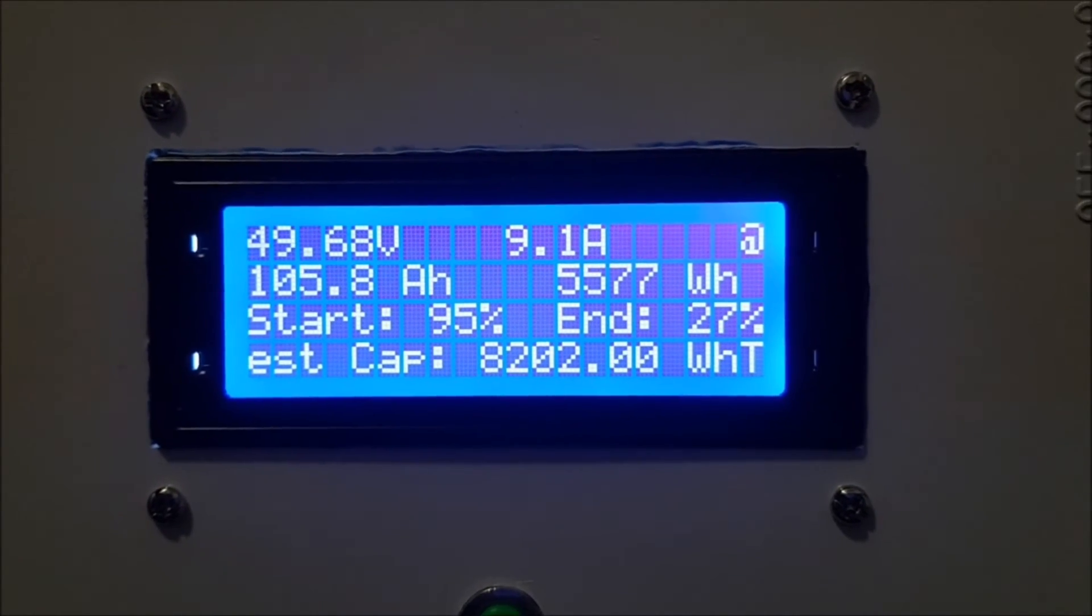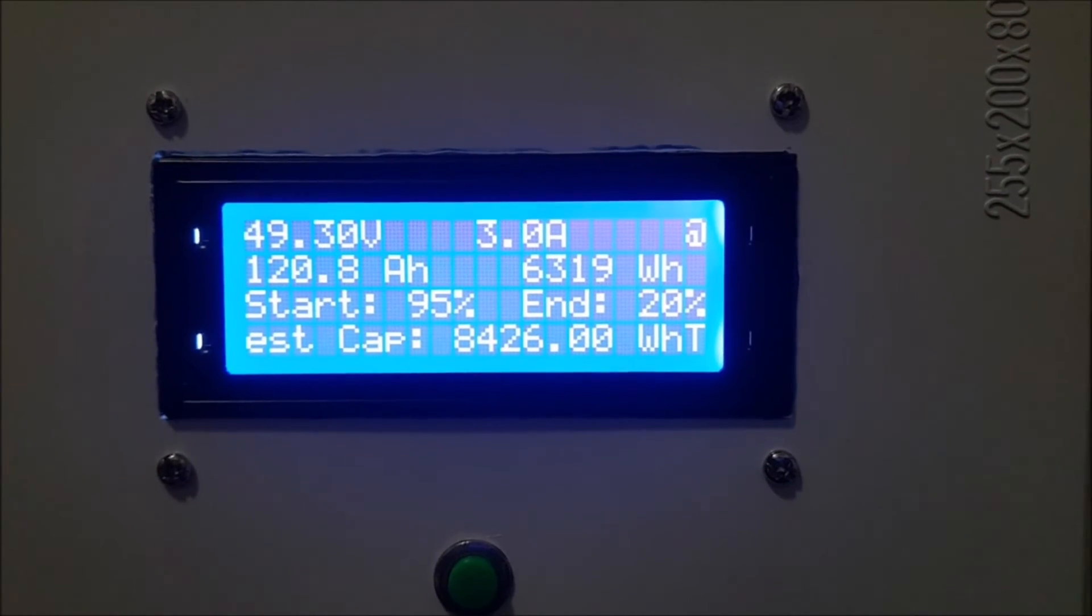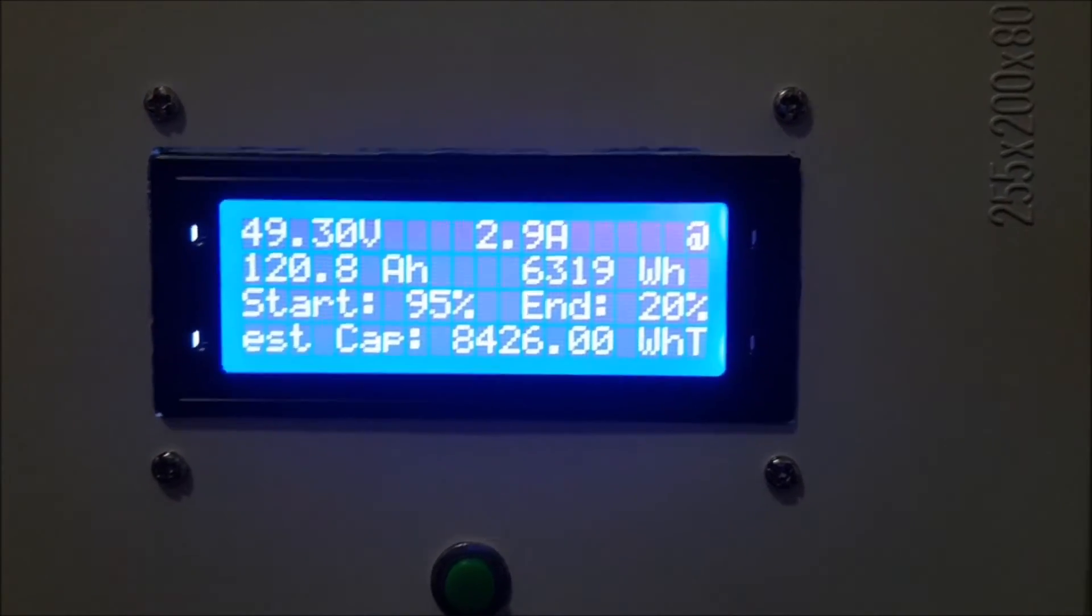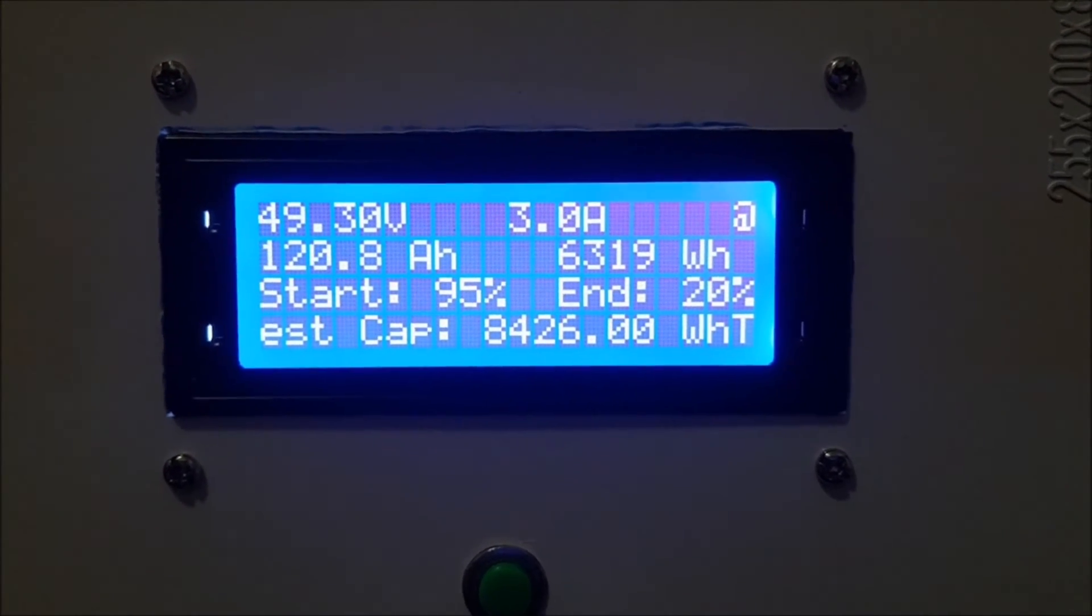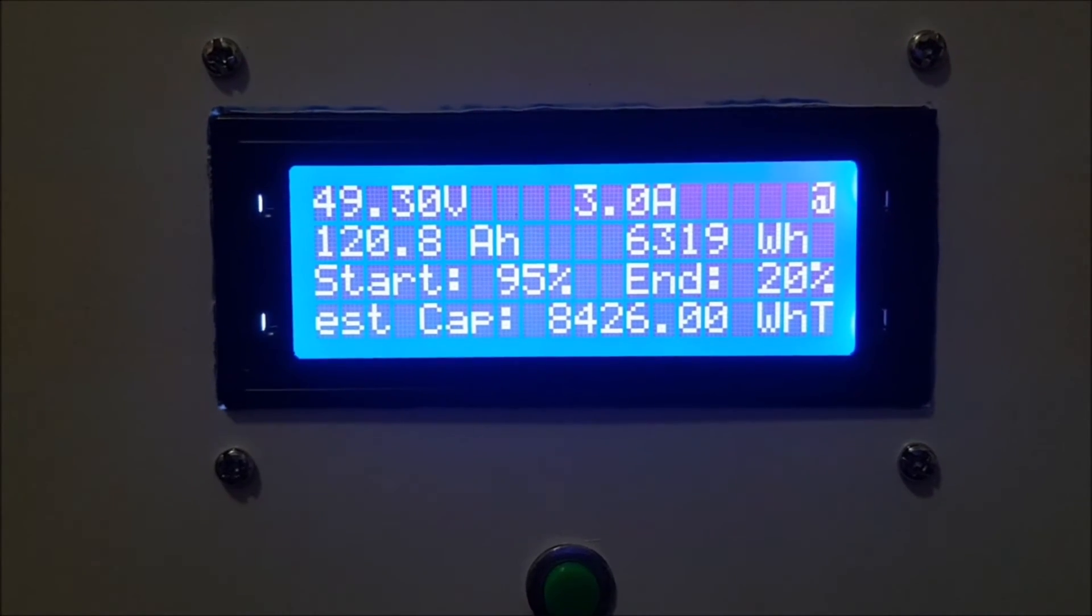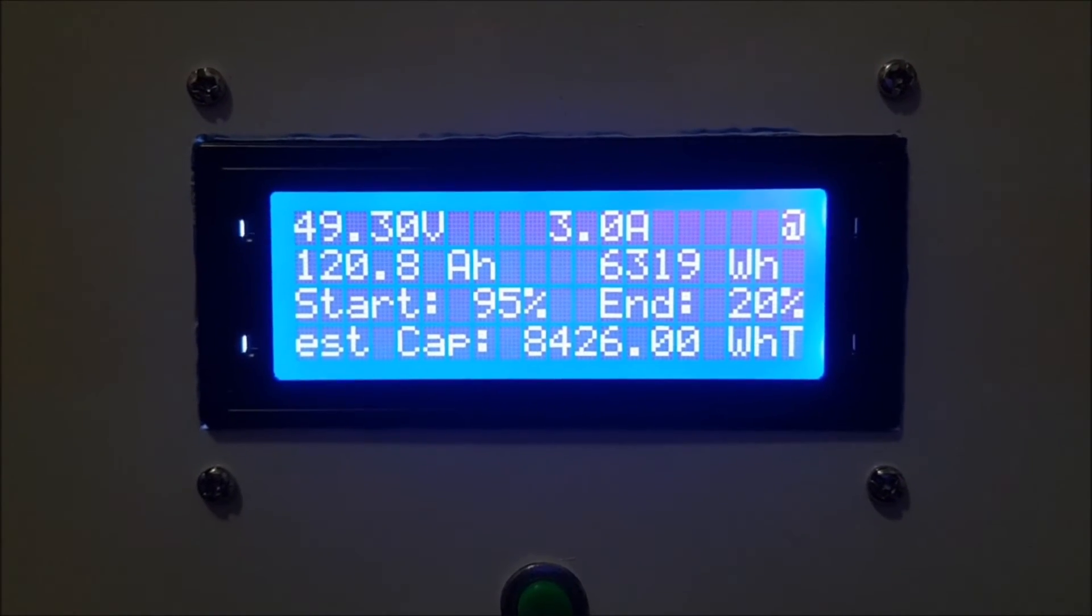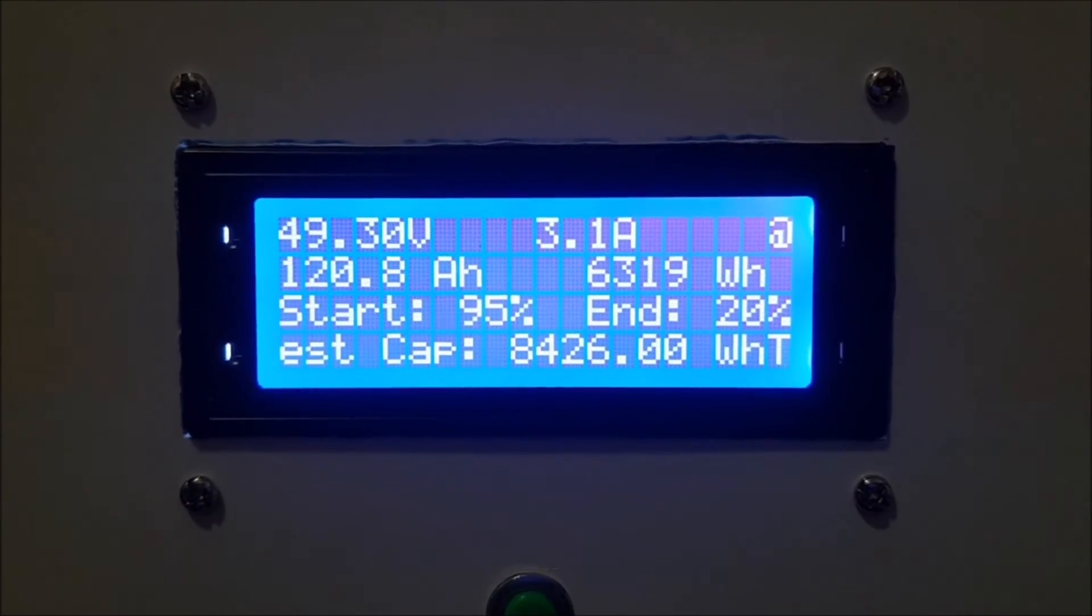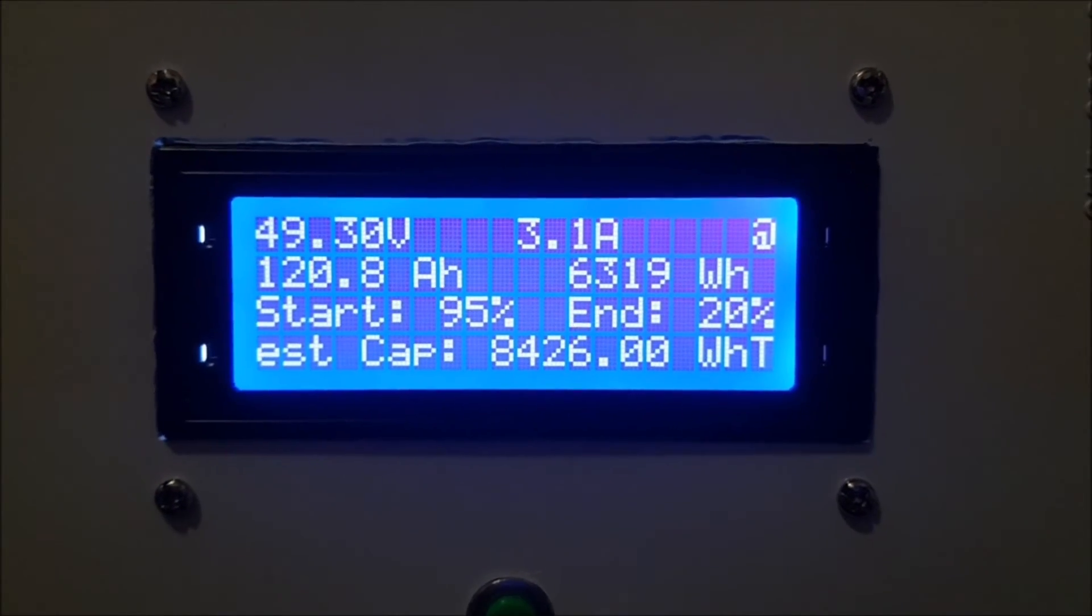We are coming back in about one hour, and that's it, we are finished with our discharge test. It went from 95% down to 20%, so we have used 75% of our capacity. 121 amp-hours have been used, 6320 watt-hours. And these numbers are taken into calculation for the estimating capacity of this pack: 8426. So if you remember our last test, we had 8000 at our discharge which we measured just by a multimeter, and 8600 when we charged it back up. And I said the truth will be somewhere in between, and yeah, this is it. This is very close to the truth and very promising numbers.